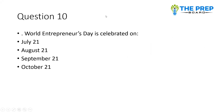World Entrepreneur Day is celebrated on which day? Options are July 21, August 21, September 21, or October 21. The correct option is August 21. You can note the correct answer.